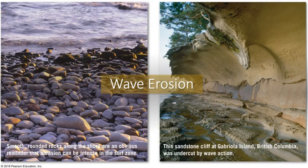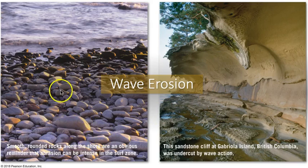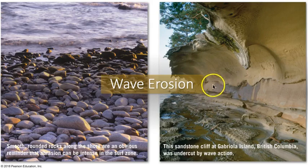The photographs from the textbook here show us the result of that abrasion. On the left, we have the rounding of boulders and pebbles, very common along shorelines, and then we have the undercutting of the cliff, again due to the fact that the water crashing at the base of the cliff is doing abrasion to that rock.